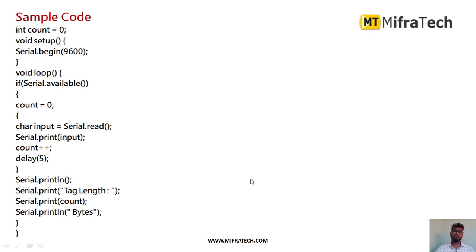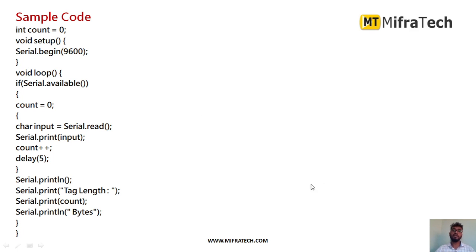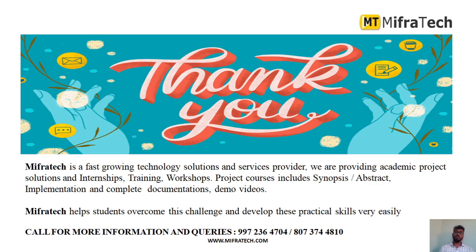Next we will see the sample code for this RFID module. First, we have to do the setup with Serial.begin at 9600 baud rate setting. Then, checking if serial data is available and making the count. Using this sample code, you can see the output in the serial monitor — what is the tag, you can print the count and tag length whenever a tag is detected. This is a sample code; you can write your own code depending on the particular application where you are using this RFID reader module.